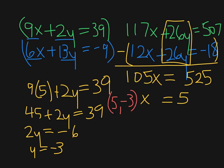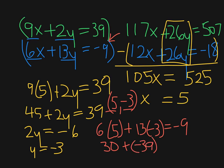So now I've just got to plug it into the second equation here and see if I'm right. 6 times 5 plus 13 times negative 3 equals negative 9. So 30 plus negative 39 equals negative 9. That's true. So for both of them, it's true. So that's my answer. And I'm done.